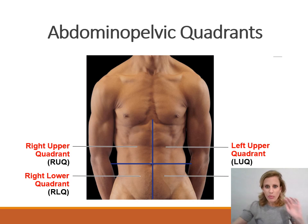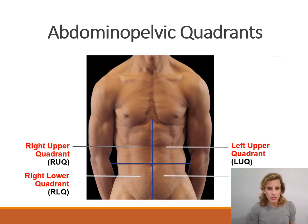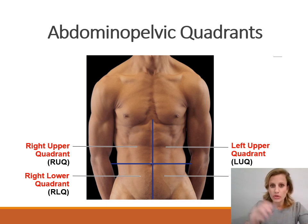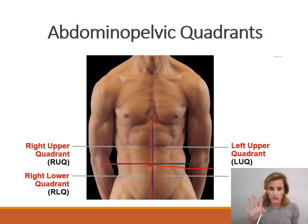Here you see the abdominal pelvic quadrants — quad meaning four. So these are four regions dividing up the abdominal pelvic area, the abdomen and the pelvis. To get the abdominal pelvic quadrants, you just draw a plus sign and the lines intersect at the umbilicus or the belly button. We call it the umbilicus because this is where the umbilical cord attached when the fetus was in the womb. You draw a vertical line and a horizontal line, and they cross at the belly button, dividing the abdominal pelvic area up into four different regions.